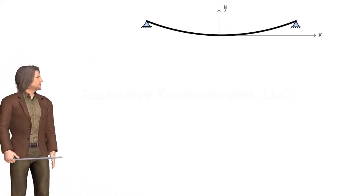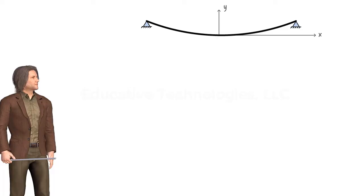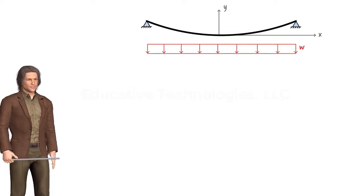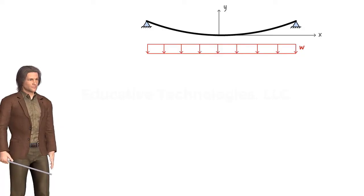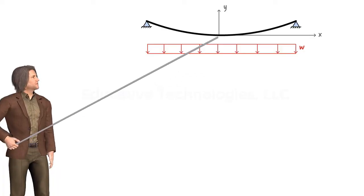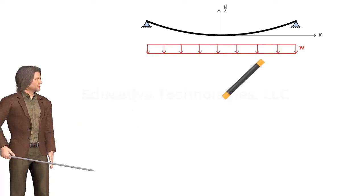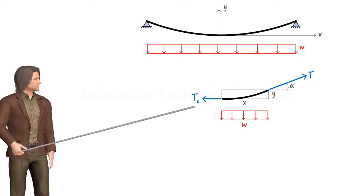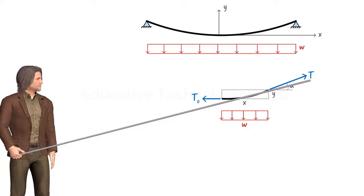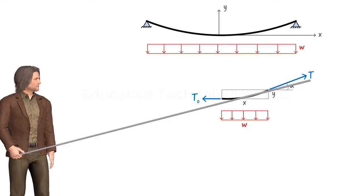Here is a cable suspended from its two ends. This configuration resembles that of the Golden Gate Bridge. Let's assume that the bridge deck exerts a uniformly distributed load of W on the cable along the X axis. Assuming that the origin of the coordinate system is at the lowest point of the cable, we can draw the free body diagram of the segment just to the right of the origin. Here, T0 is the tension force in the cable at its lowest point, and T is the tension force at the right end of the segment.